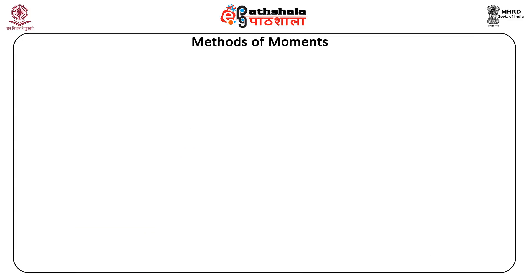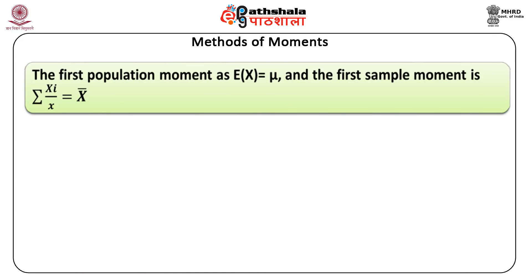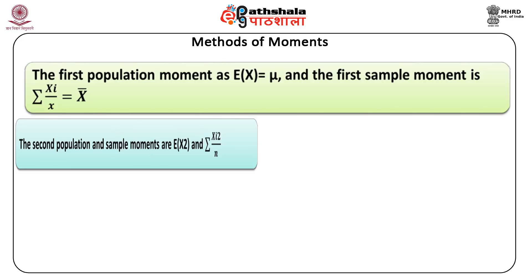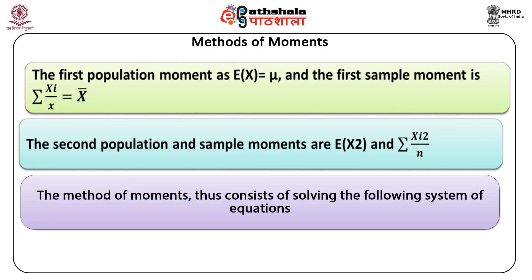Computing by the above method, we get the first population moment as E(x) = mu, and the first sample moment equals sigma(xi)/n = x-bar. Similarly, the second population and sample moments are E(x^2) and sigma(xi^2)/n respectively. The method of moments involves equating the population moments to their corresponding sample moments. Thus, we get as many equations as are required, from which we solve for the unknown parameters of the population.